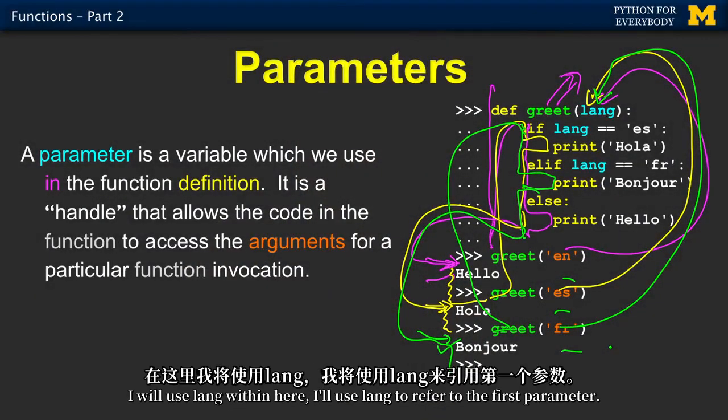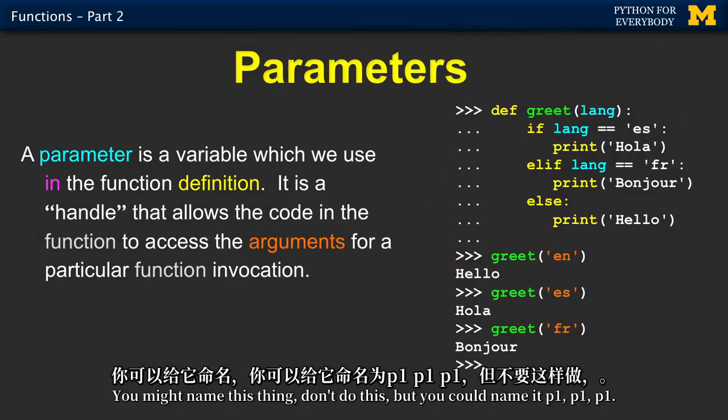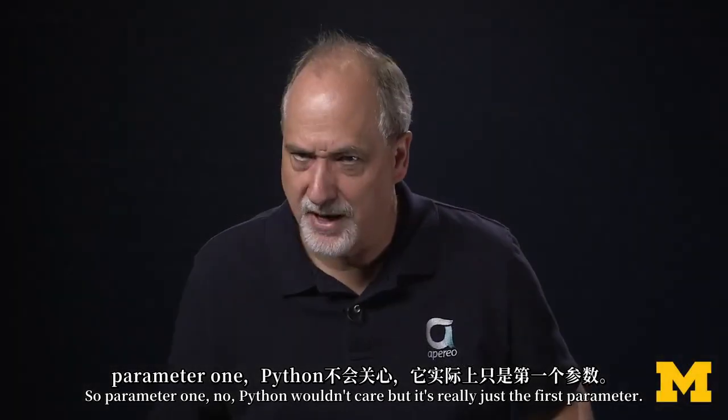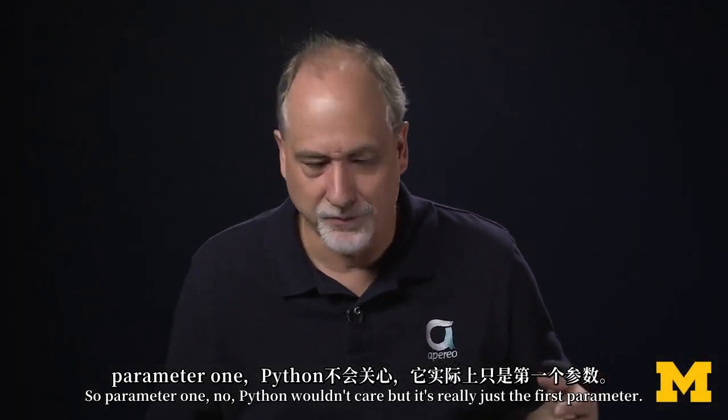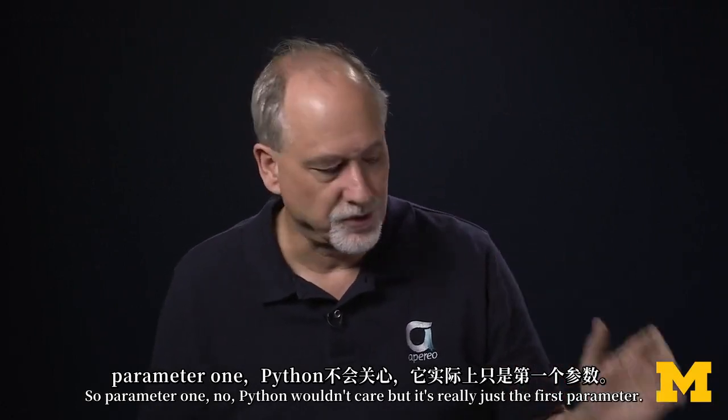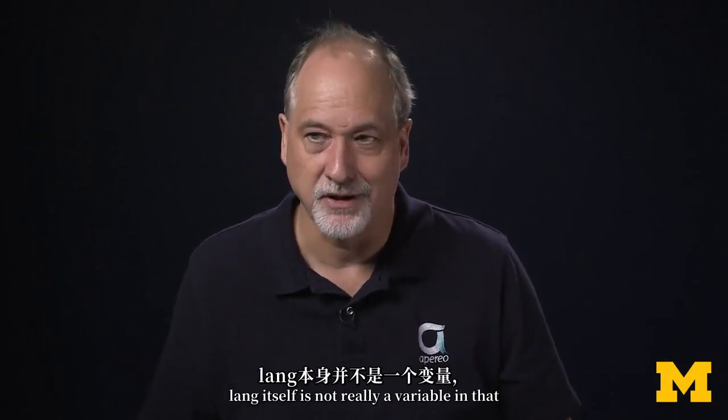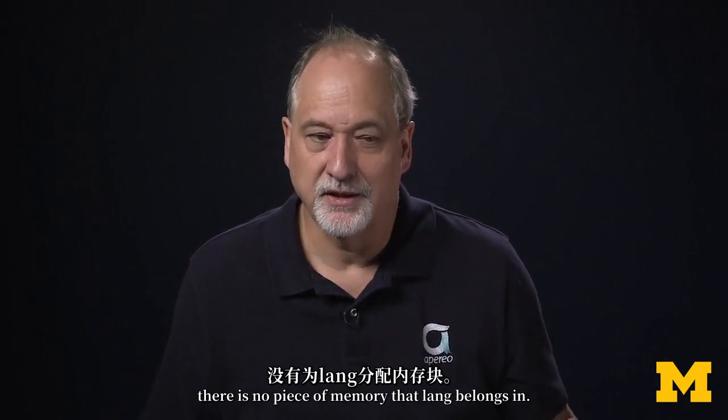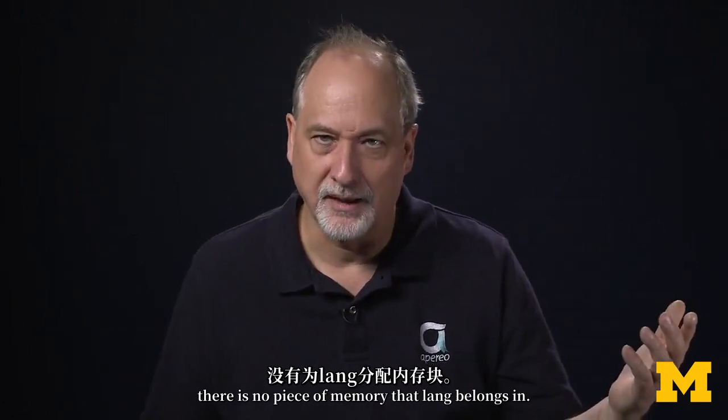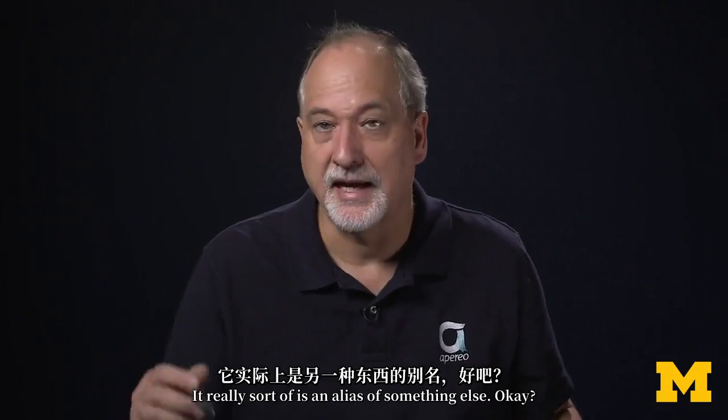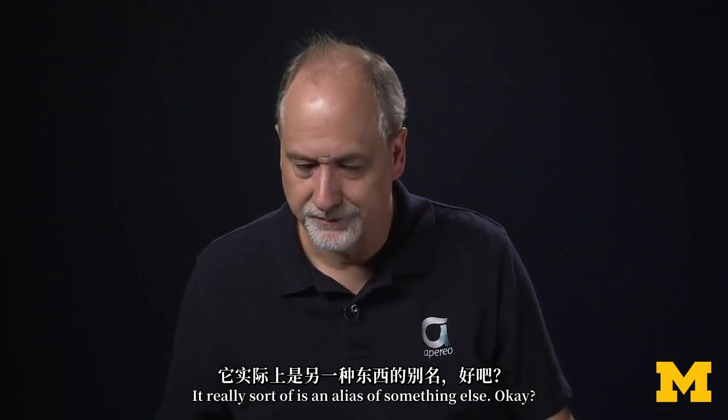So you see the whole pattern there. A lot of different pretty colors there. But you get the idea that it gets run a couple of times. And lang is the alias for whatever the first parameter happens to be. And that's the best way to think about it. Whatever the first parameter is. I will use lang within here. I'll use lang to refer to the first parameter. You might name this thing - don't do this - but you could name it P1. So the parameter one. No. Python wouldn't care. But it's really just the first parameter. Lang itself is not really a variable. And that there is no piece of memory that lang belongs in. It really sort of is an alias of something else.